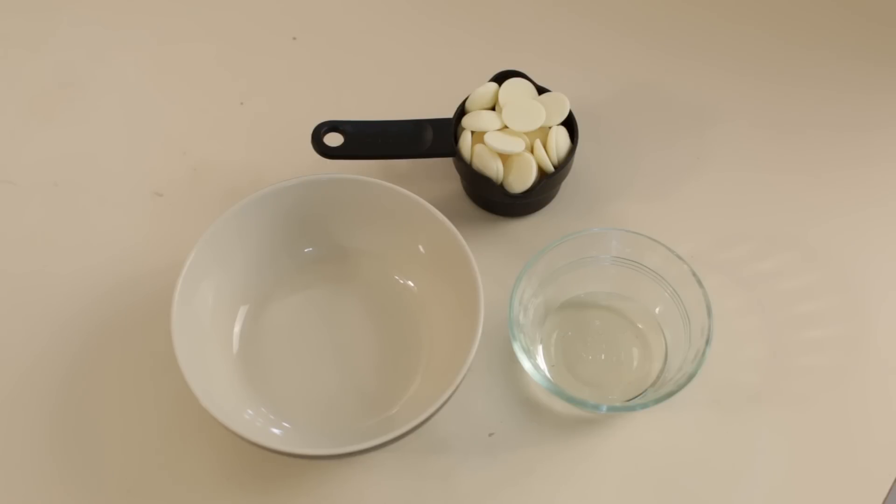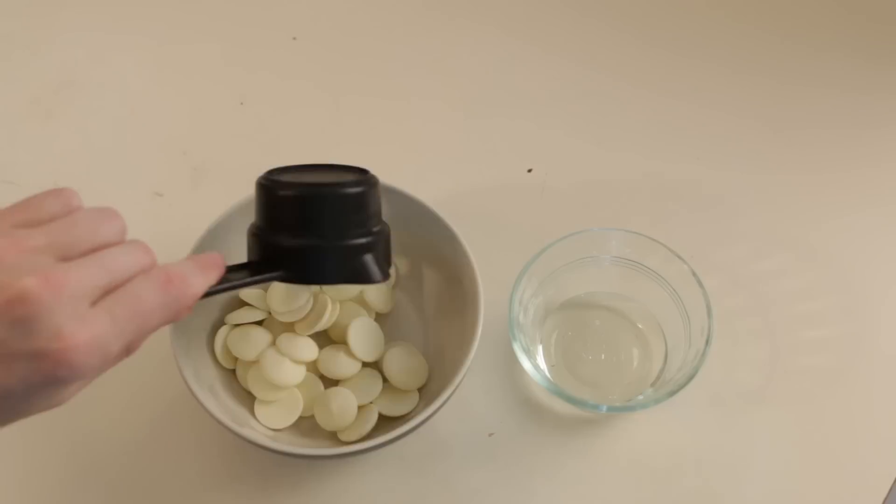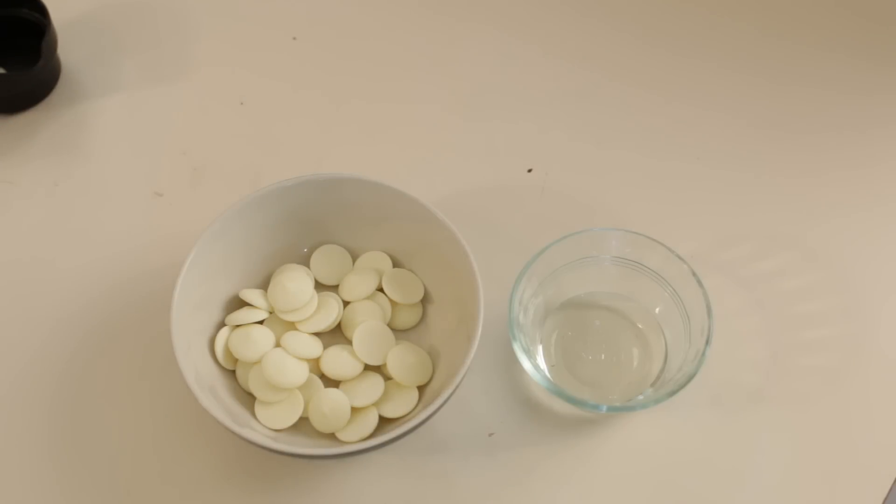So first what we need to do is we need to melt the chocolate. I am going to take the chocolate and put them in this bowl, and I am going to just put them in the microwave. I am going to start at 30 seconds, and then after that stir, and then go down to 20 seconds and stir. That is probably going to be enough for this amount of chocolate. I am going to go to that point right now.